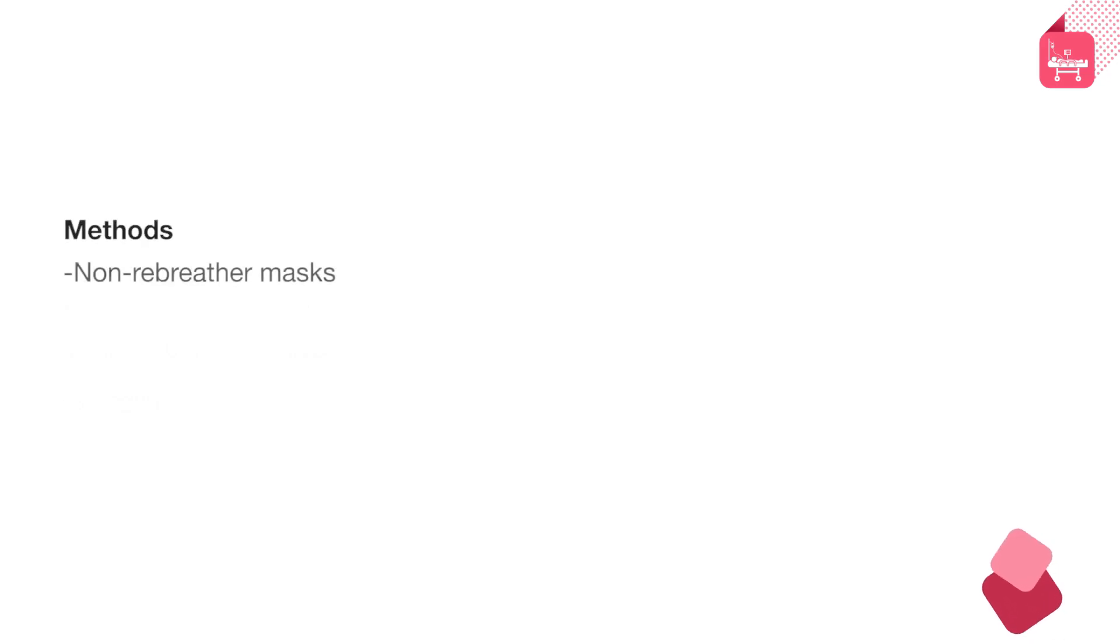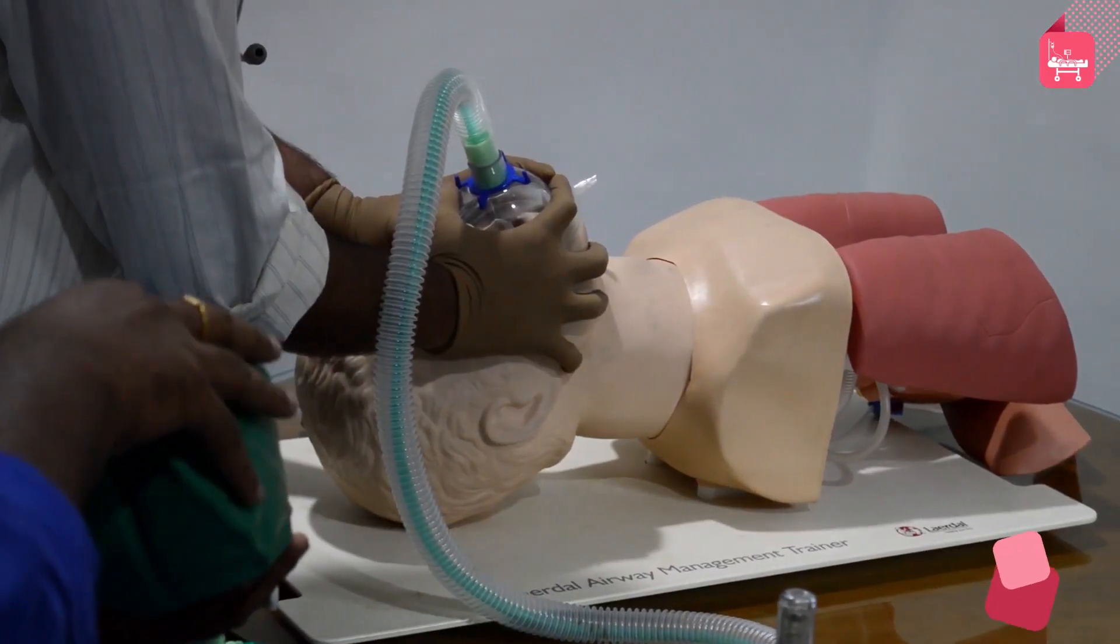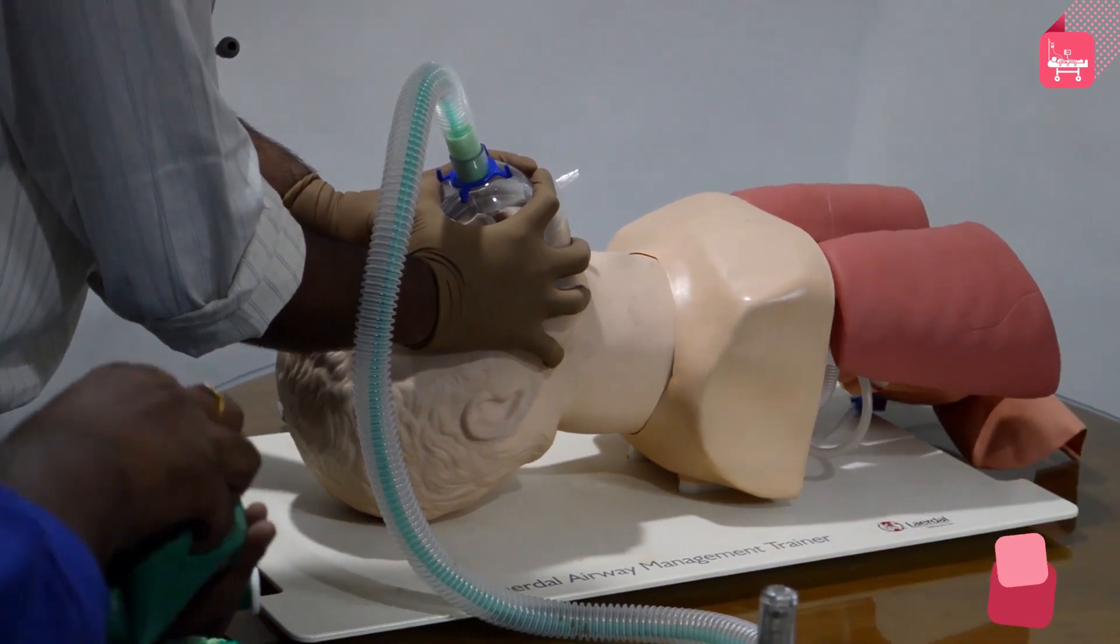Using non-rebreather masks that deliver 65 to 70 percent in cases where difficult intubation is not anticipated; well-fitting bag valve masks that deliver greater than 90 percent oxygen; non-invasive positive pressure ventilation that delivers 100 percent oxygen in high-risk patients with moderate to severe shunt physiology. Administer high flow oxygen for three to five minutes.